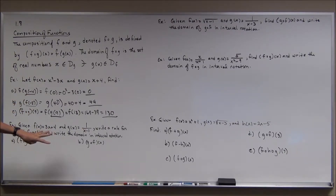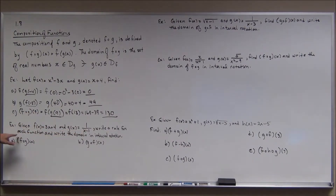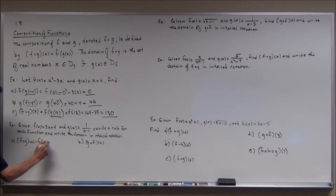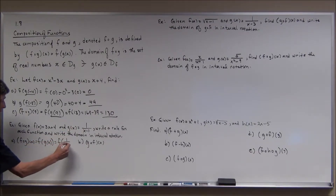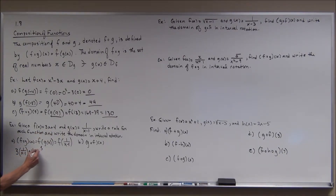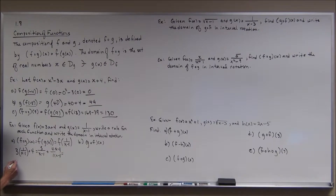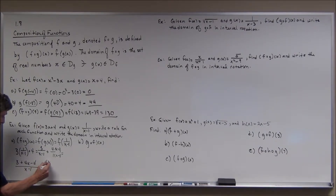Now let's look at it in terms of x, in terms of the rules. Given f of x equals 3x plus 4 and g of x equals 1 over x minus 1. The domain of f is all real numbers, but the domain of g is all real numbers except 1. For f circle g of x — which is f of g of x — I substitute 1 over x minus 1 into f, giving 3 times 1 over x minus 1 plus 4. Getting a common denominator: 3 over x minus 1 plus 4 over 1, multiplying top and bottom by x minus 1, gives 3 plus 4x minus 4 over x minus 1, which simplifies to 4x minus 1 over x minus 1.